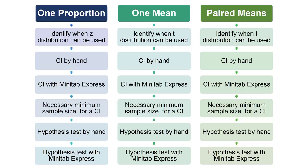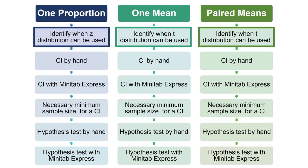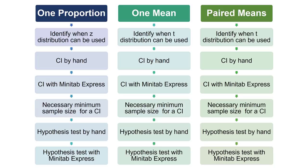Here's a blueprint for everything we're going to cover in this video. Note the pattern: we're going to be going through all six learning objectives for one proportion, then for one mean, and finally for paired means. You should see a lot of similarities across the methods used for these three parameters. One thing to point out is that the first objective varies slightly depending on the parameter. For one proportion, we'll see the Z distribution again. But for one mean and paired means, we'll look at the T distribution, which is similar to the Z distribution but varies slightly depending on the sample size. If you open this video on YouTube, in the description you can find timestamps to jump ahead to a specific example.